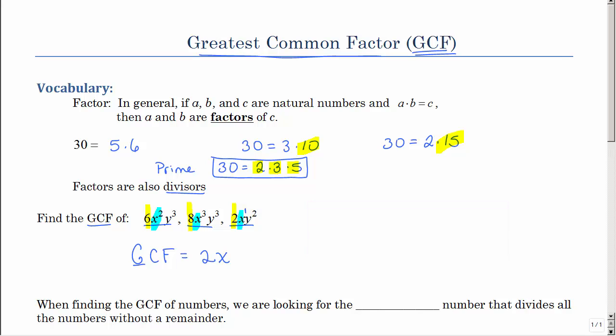Then we're going to look at, do they all have a y? Yes, they do. So y is also a common factor. And we look and we choose the smallest exponent, because again, they have a y squared in common.